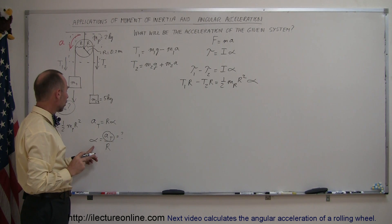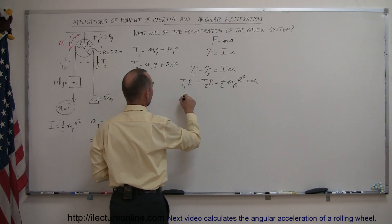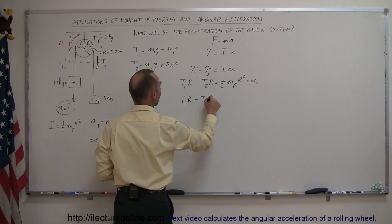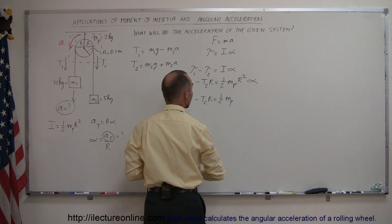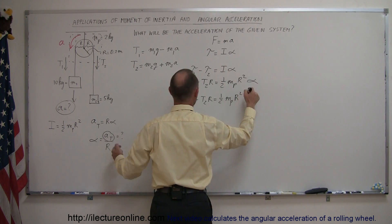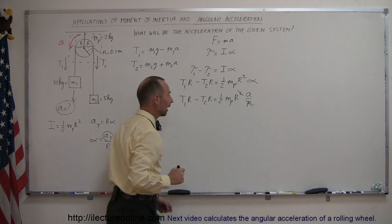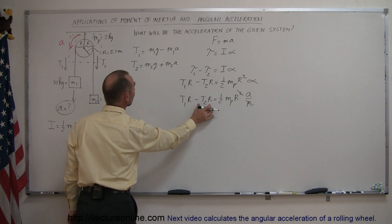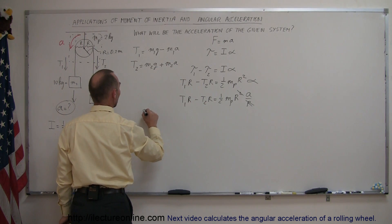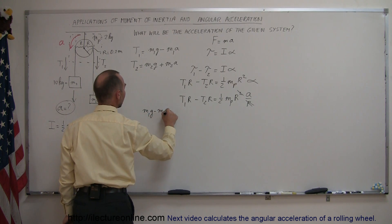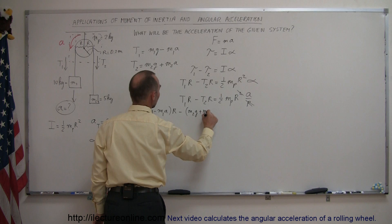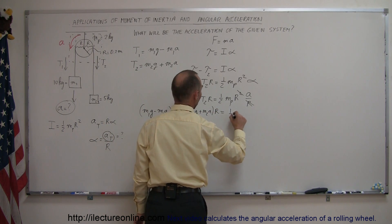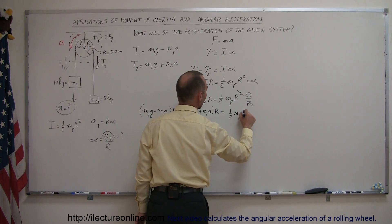Since we're looking for the tangential acceleration, we replace alpha with a/R. So the equation becomes: T1·R − T2·R = ½·M_pulley·R²·(a/R), and that R cancels with one R in R², leaving: T1·R − T2·R = ½·M_pulley·R·a. Now we plug in what T1 and T2 are equal to. So we have: (M1g − M1a)·R − (M2g + M2a)·R = ½·M_pulley·R·a.